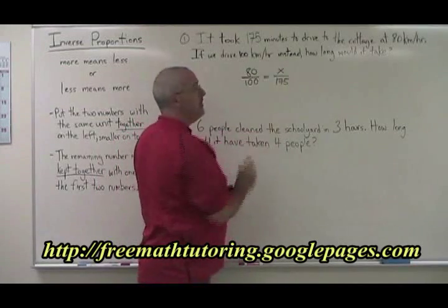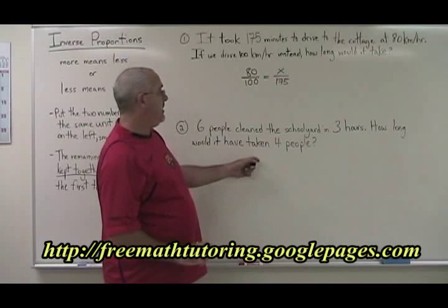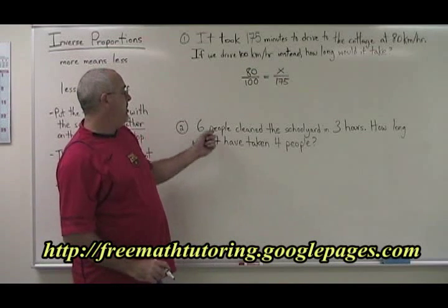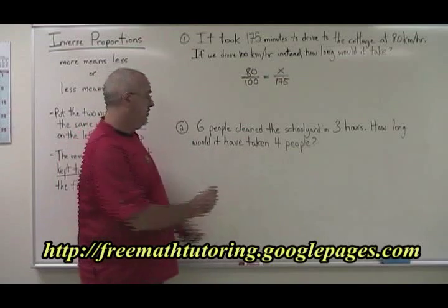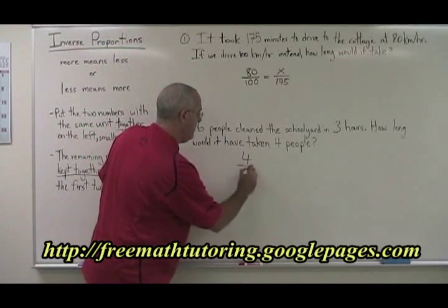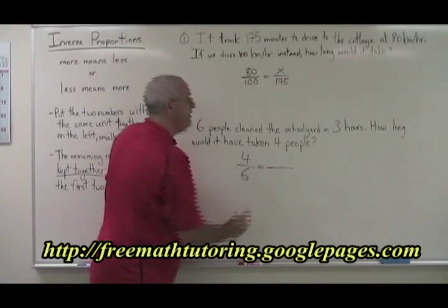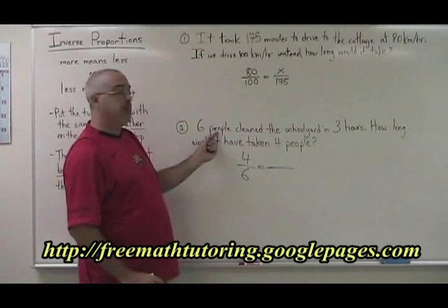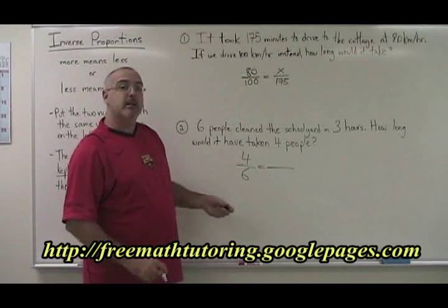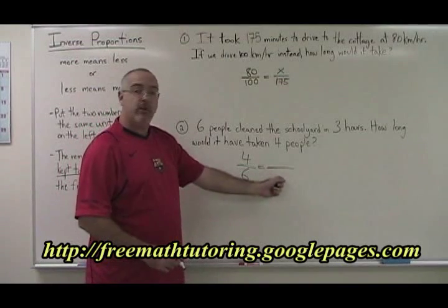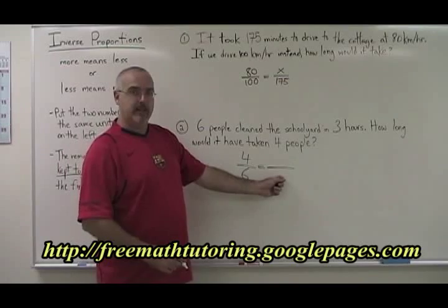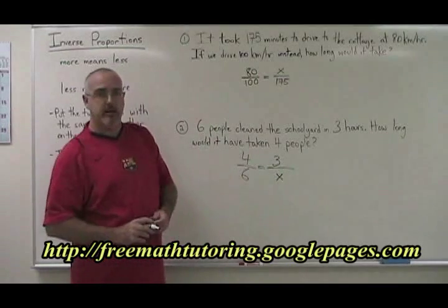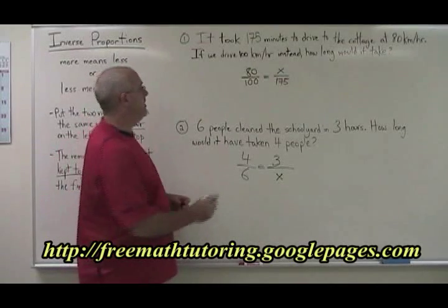We put our x in the last remaining place. Let's try it with the second problem. The two numbers with the same unit are the people: six people and four people. We put them together on the left, smaller one on top. Then we look for the other number, and we see three hours goes with six people. So because this is an inverse proportion, we do not put the three on the bottom together with the six — we put it on top instead, and we put x in the last remaining place.